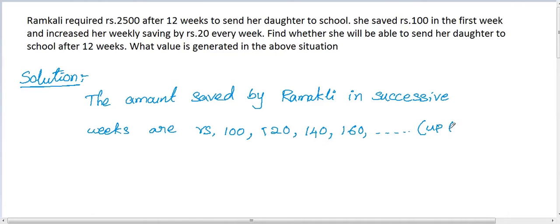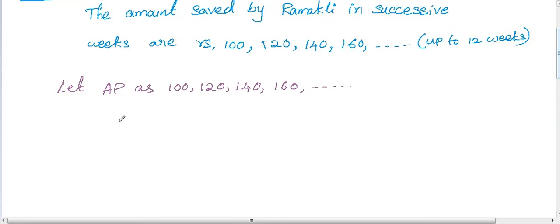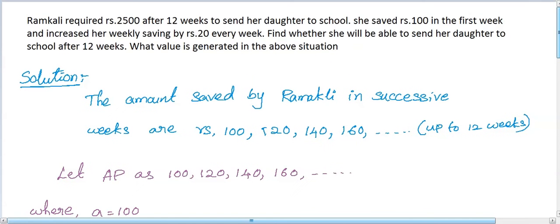Let's assume this series as an AP, arithmetic progression: 100, 120, 140, 160, and it goes on to 12 weeks. Where a is the first term, so a is 100, d is the common difference which is 20, and n is the number of weeks which equals 12.